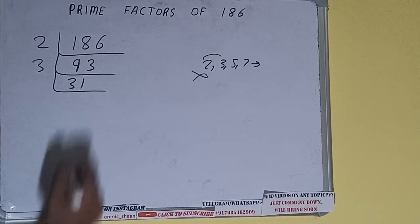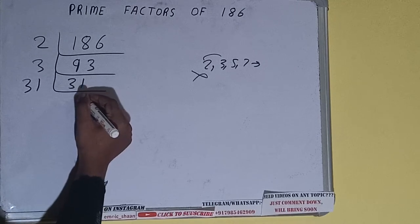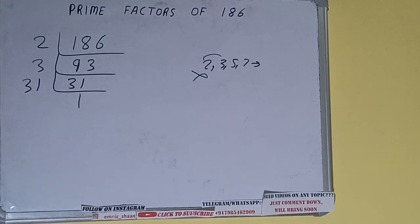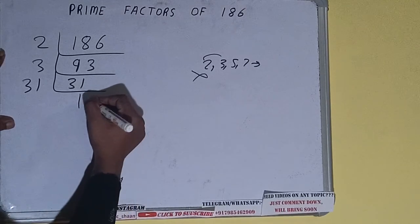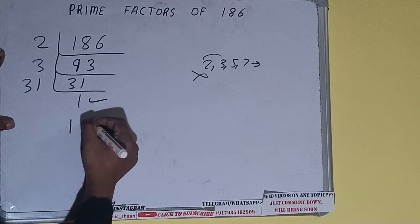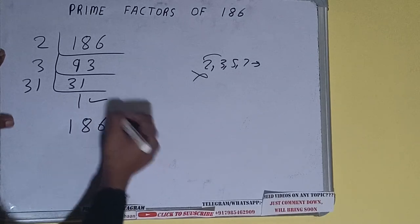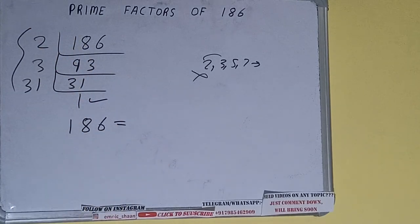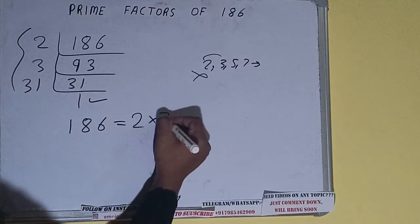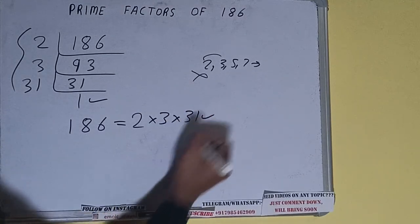So it is only divisible by itself, that is 31, and when we do so we'll be getting 1. Once we get 1, we need to stop and do one last thing. Prime factors of 186 equals multiply whatever we have on the left-hand side, that is 2 × 3 × 31. That will be the answer.